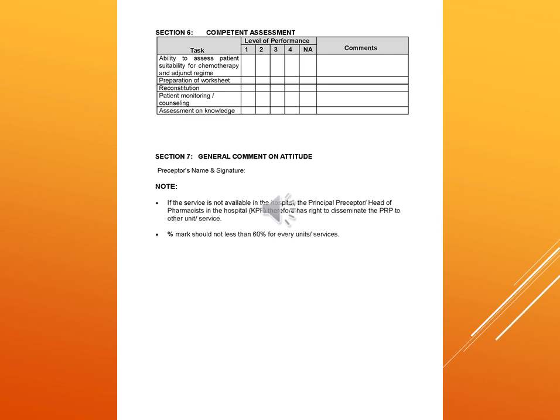Section 6 is the competency assessment. It includes tasks such as ability to assess patient suitability for chemotherapy and appropriate dosage form, preparation of worksheet, reconstitution, patient monitoring and counselling, and assessment on knowledge. Levels of performance range from level 1 to 4 and not available. Comments from the preceptor or chief pharmacist are also included.